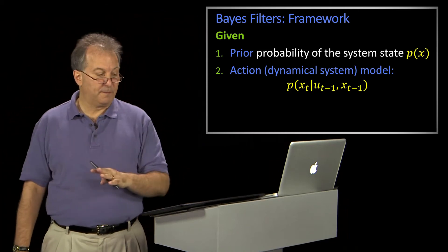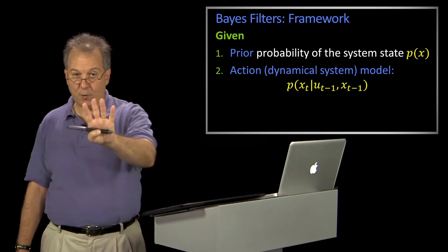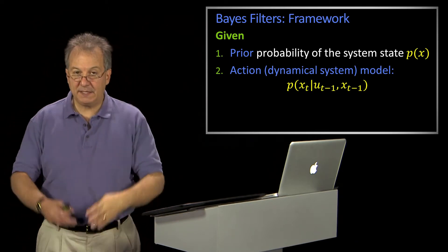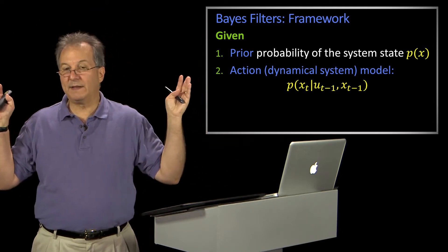So, we're going to go over a Bayes filter framework. Given four things. First is, I'm going to need some prior belief about where I'm starting. So that's p of x. Where did that come from?